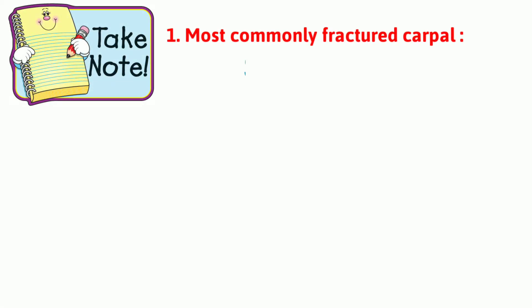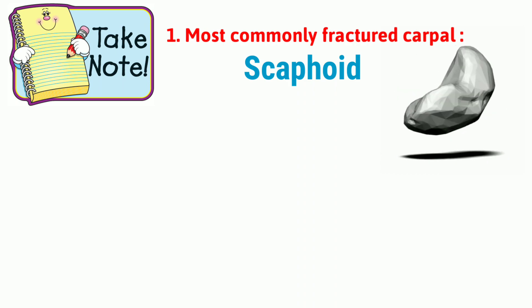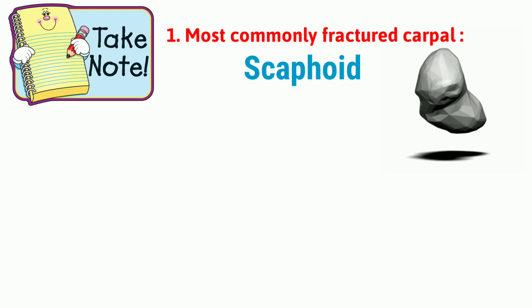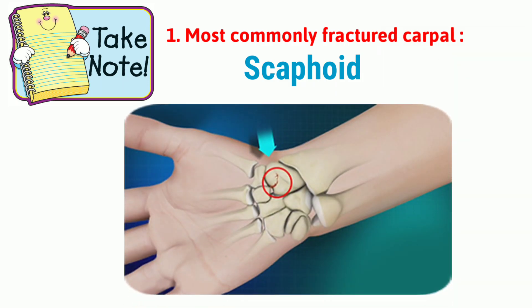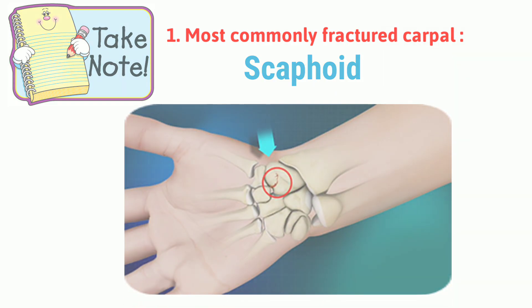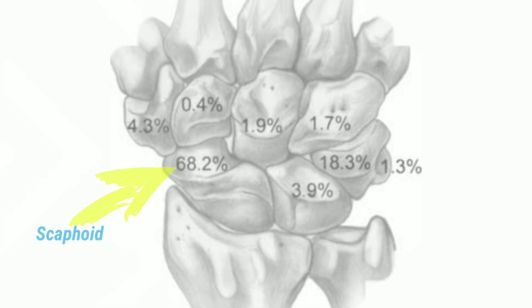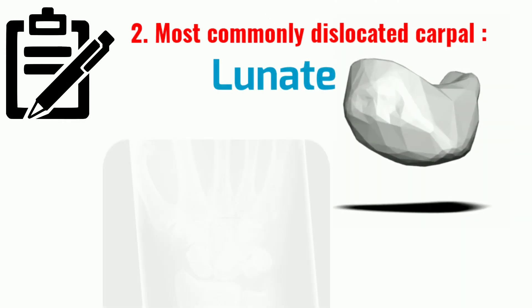The most commonly fractured carpal bone is the scaphoid. Scaphoid fracture occurs due to a fall on an outstretched hand with complete weight falling on the palm, usually during motor accidents or sports activities. The most commonly dislocated carpal bone is the lunate.